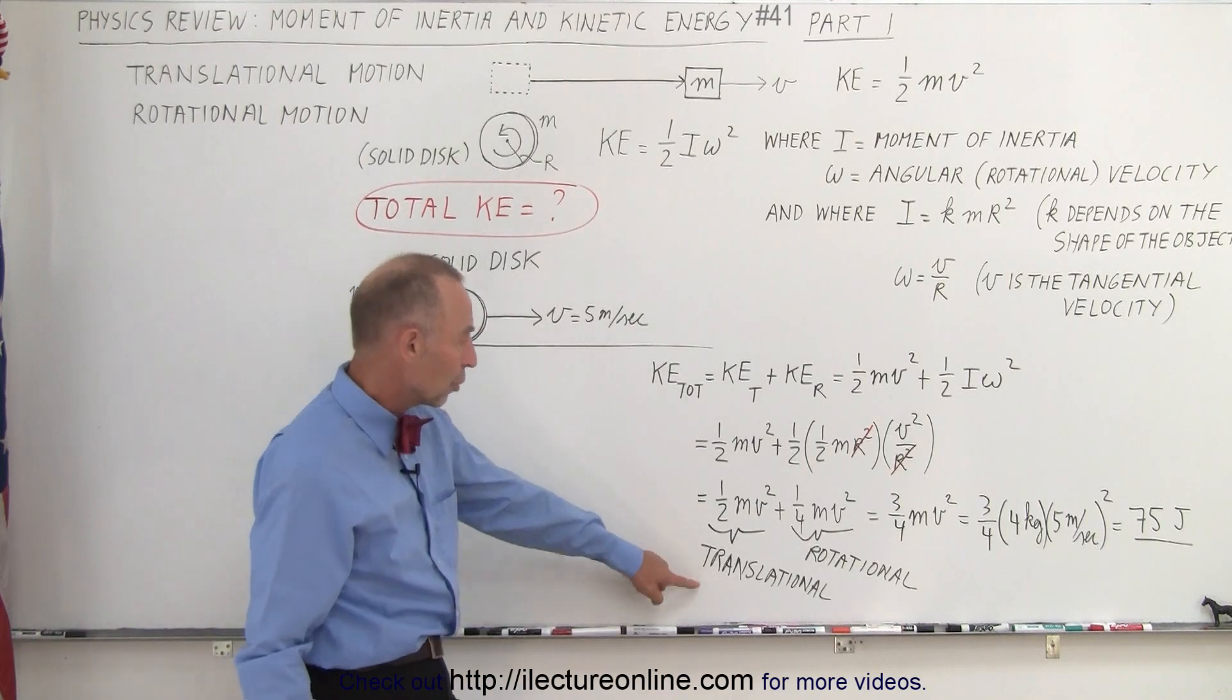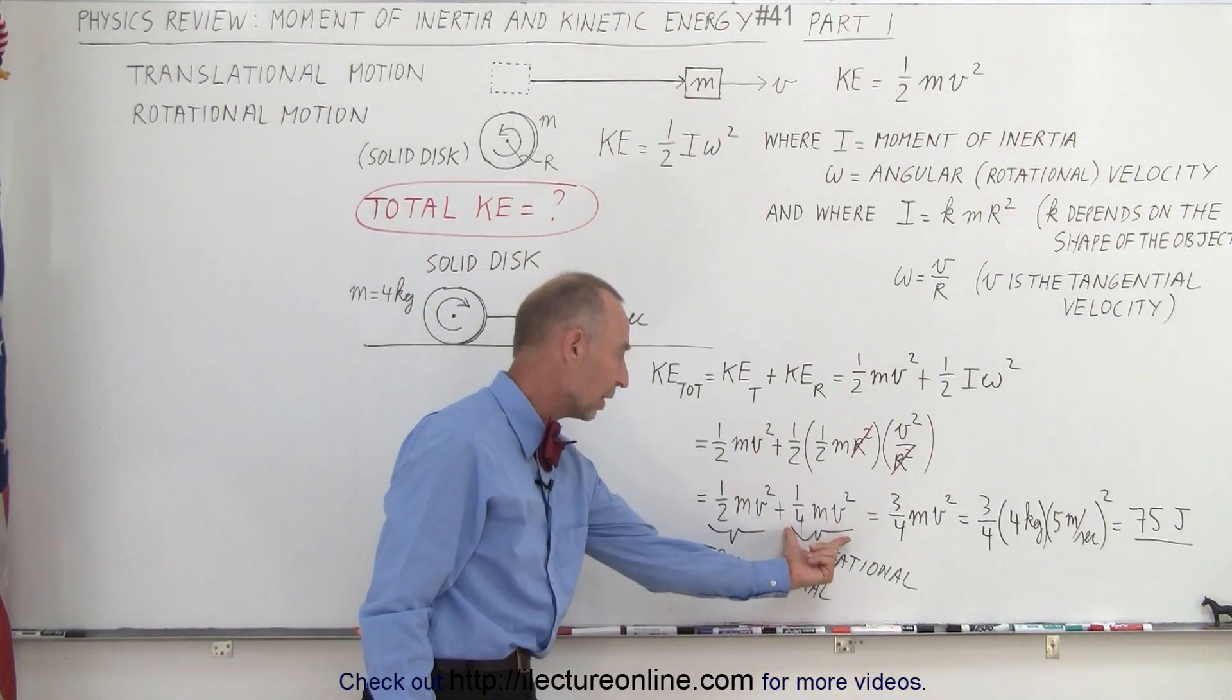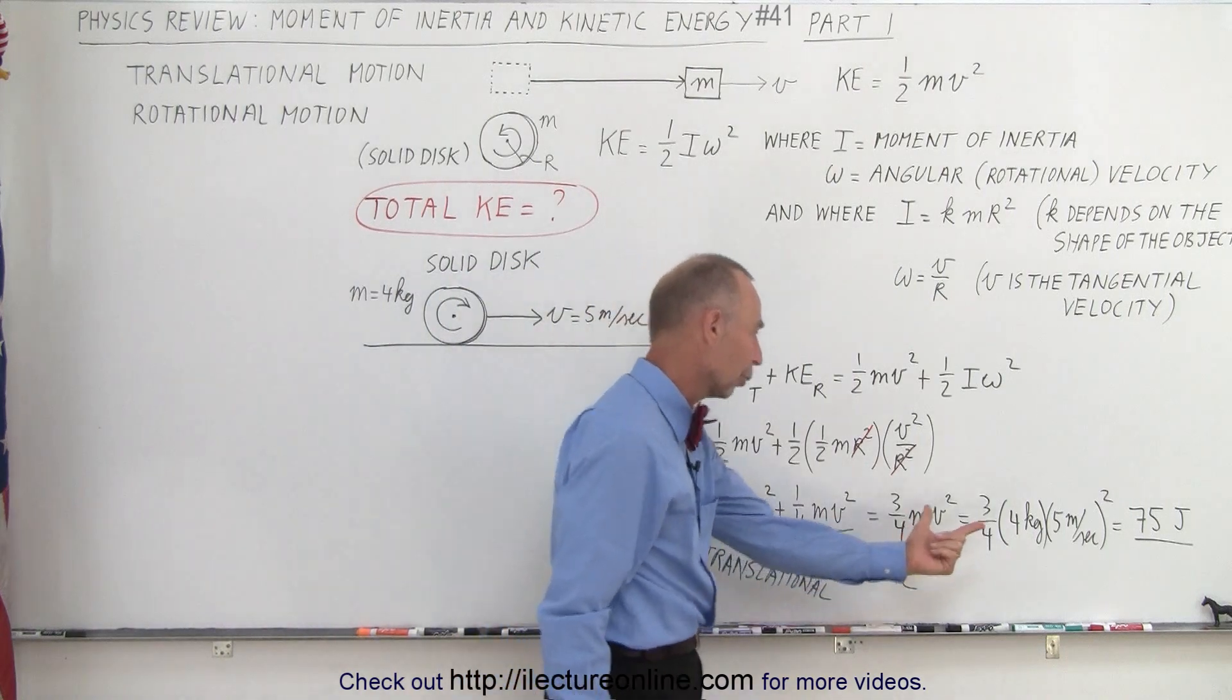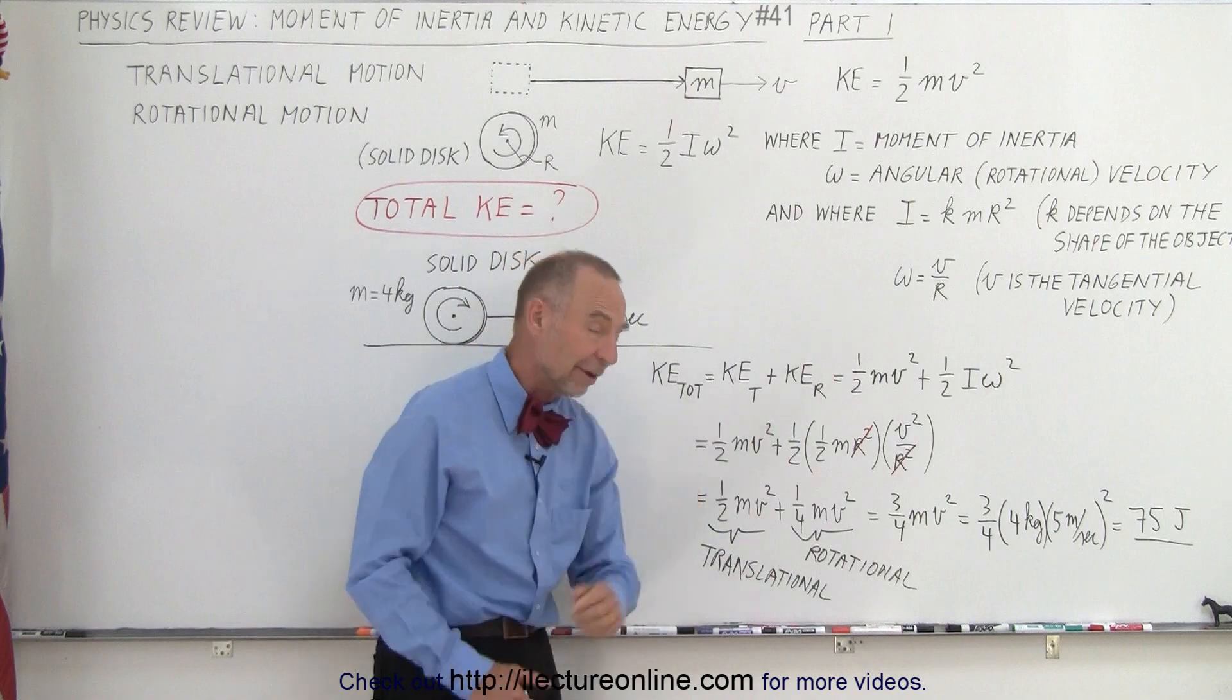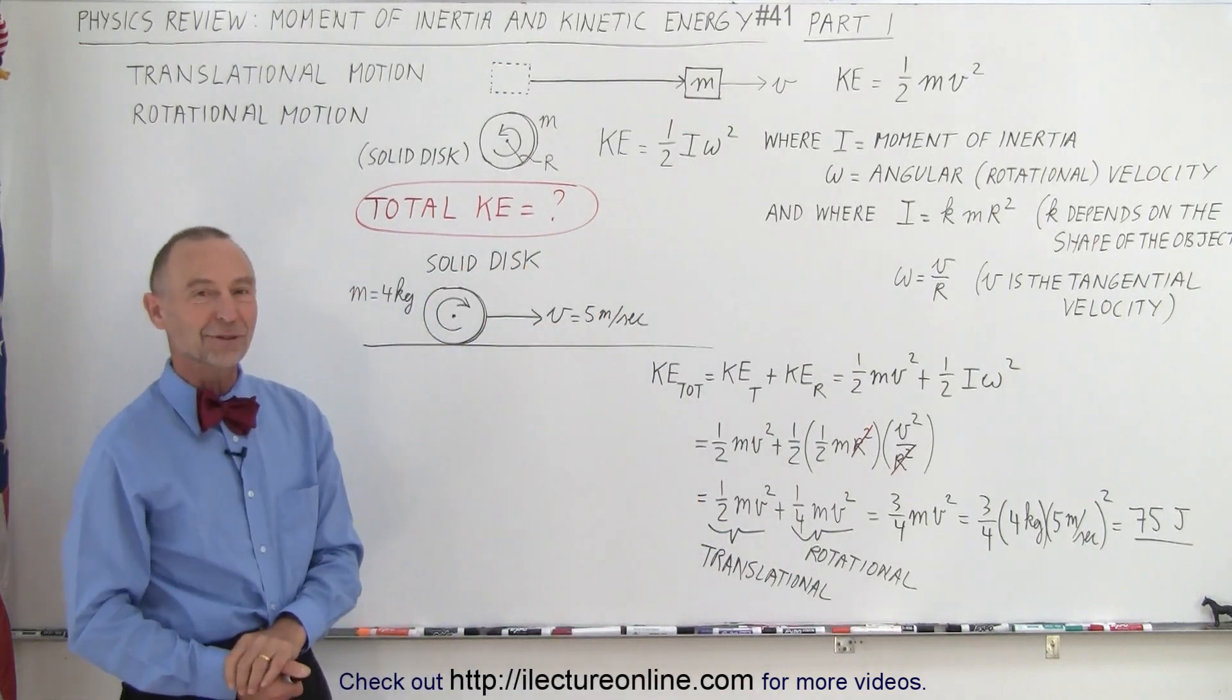You plug in the numbers, notice you have the translational kinetic energy plus the rotational kinetic energy adds up to a total of 75 joules. So 50 joules of that is the translational energy, 25 joules of that is the rotational energy.